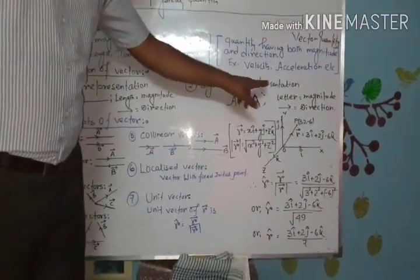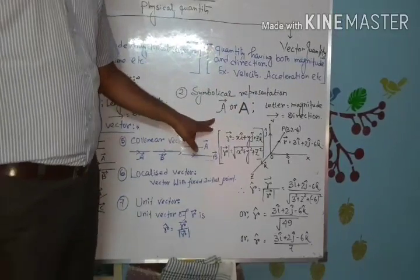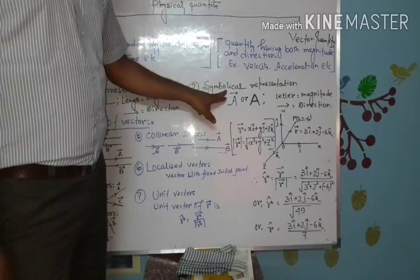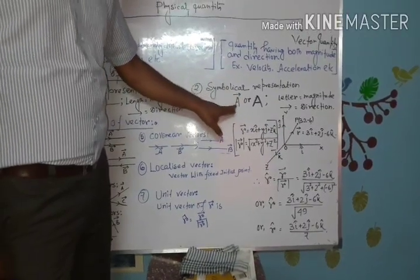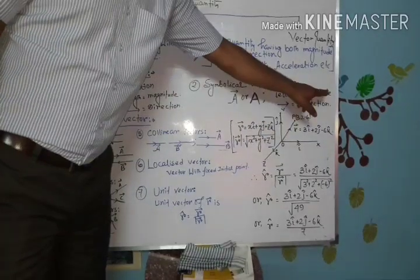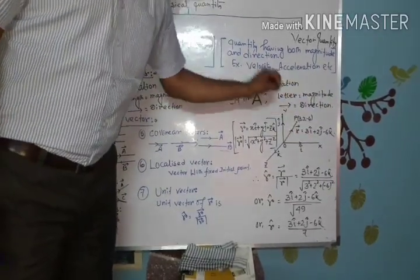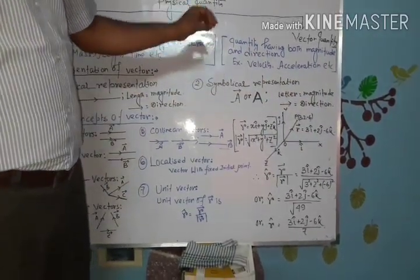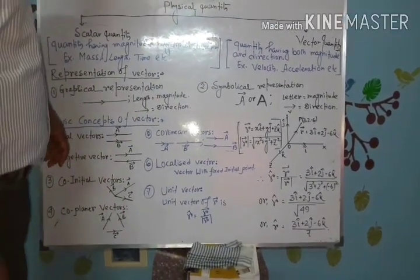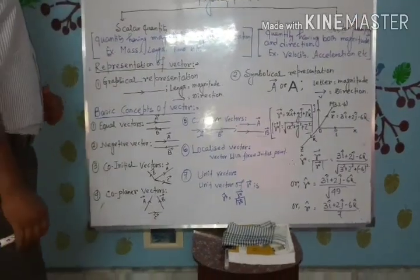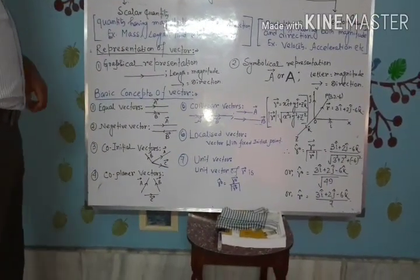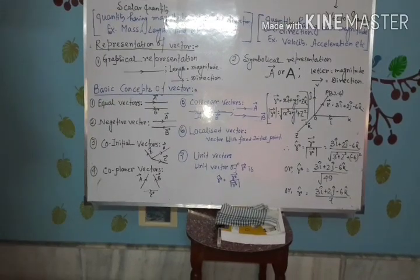In the other way, symbolically, we can represent a Vector Quantity by a letter with an arrow, where the letter represents the magnitude and the arrow represents the direction. By these two possible ways, we can represent a Vector Quantity. To know the details of vectors, we have to know some basic concepts of vectors.